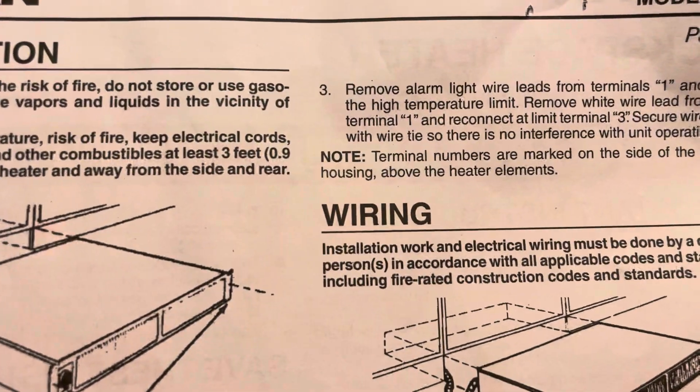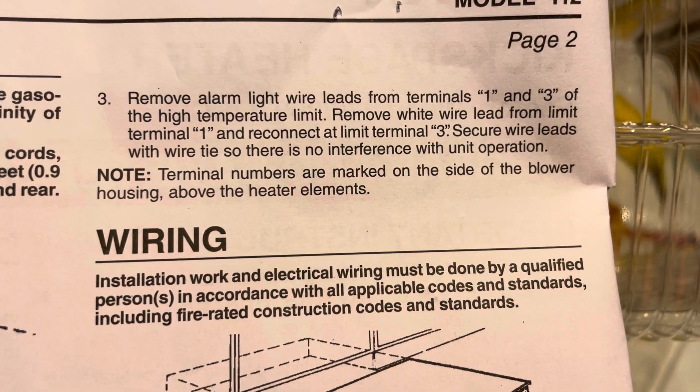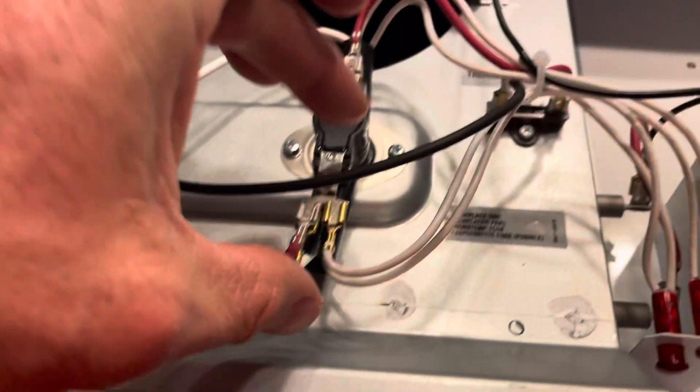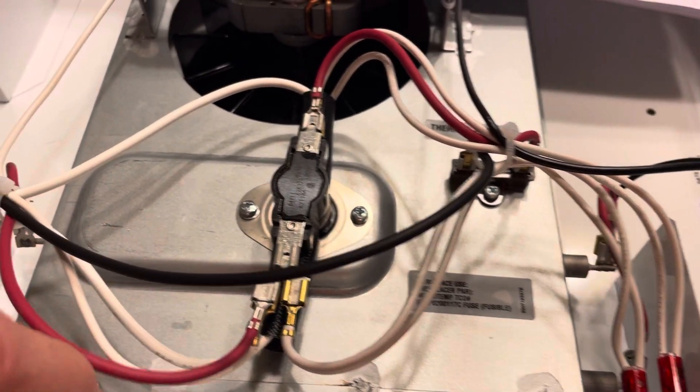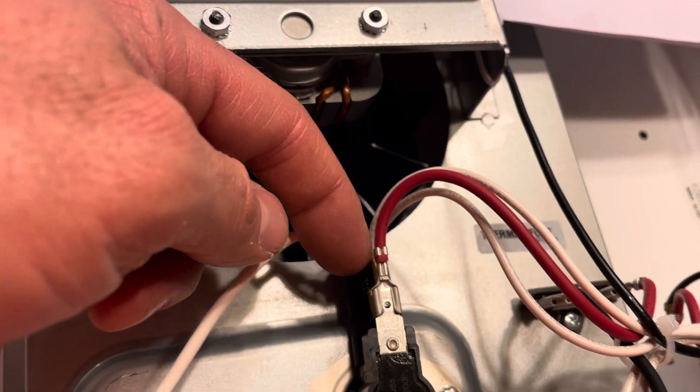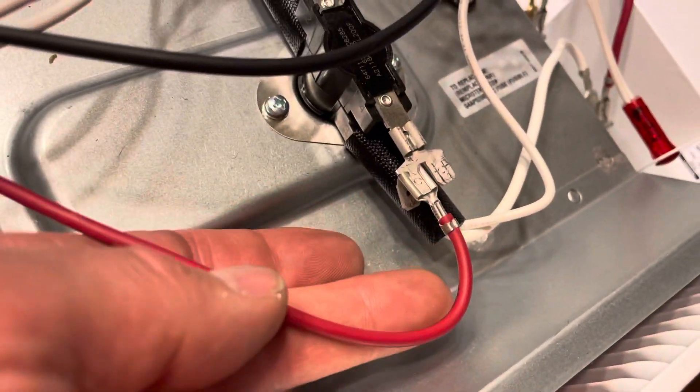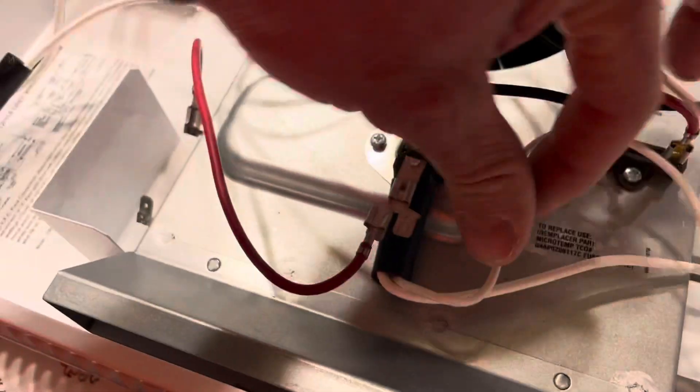So this one here is the one they're talking about: remove white wire lead from limit terminal one and reconnect it at limit terminal three. So we disconnect this white one here from terminal one, which this is terminal one, you unplug this wire and you plug it in back over here underneath where the other light was plugged in. We can see that we've done that here.